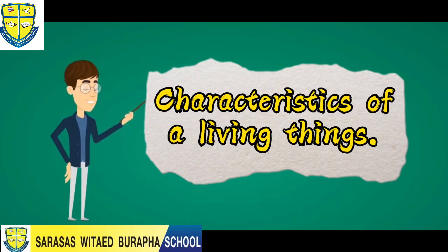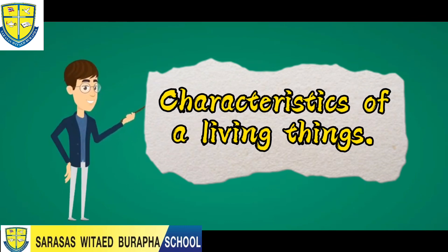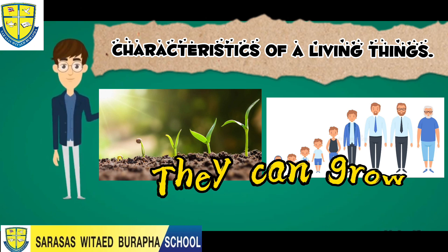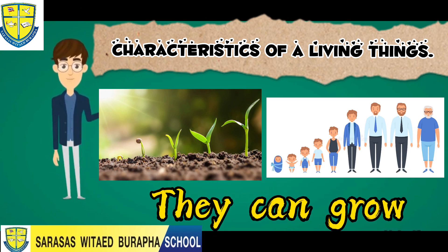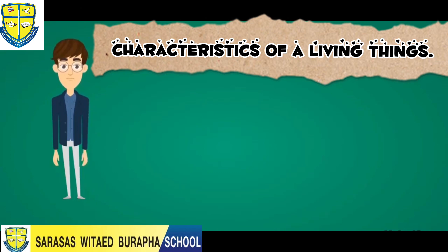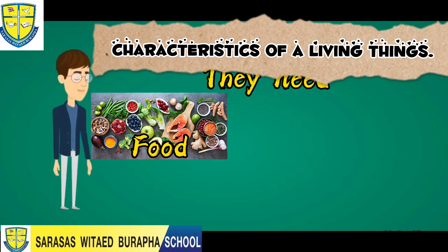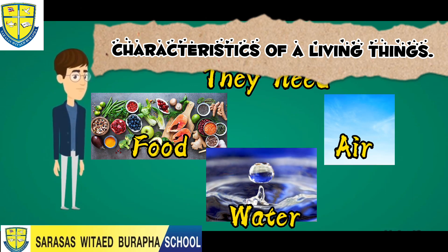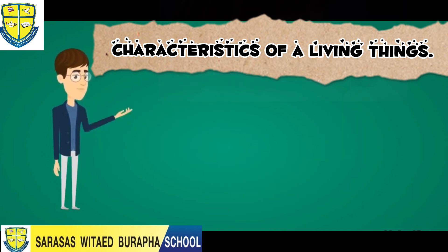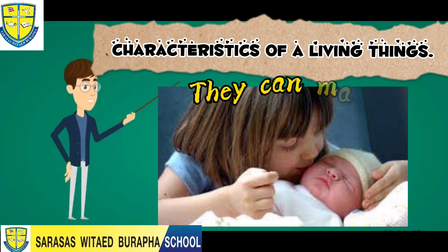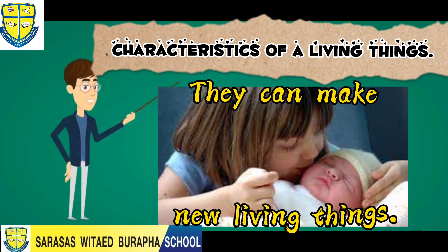Now that we're done with kinds of living things, let's identify their characteristics. The first characteristic of living things is they can grow. The next characteristic is they need food, air, and water. Another characteristic is they can make new living things.